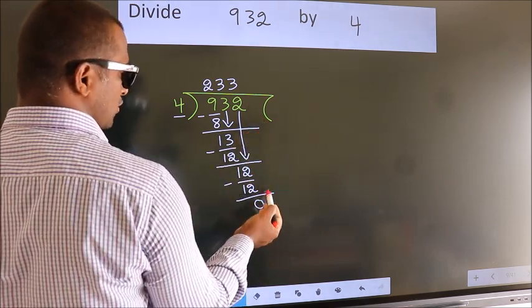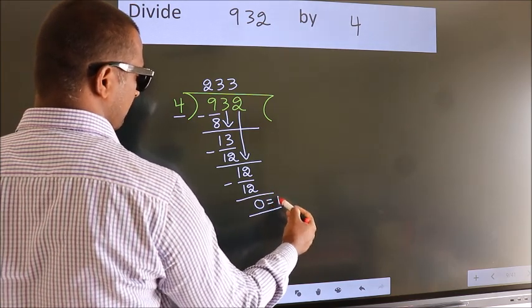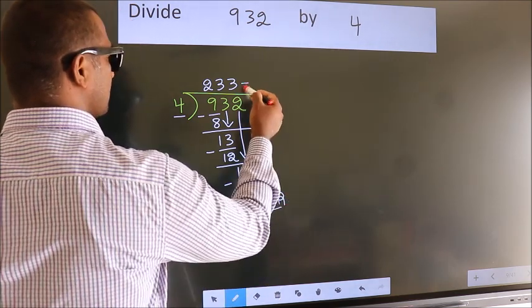No more numbers to bring it down. So we stop here. This is our remainder. This is our quotient.